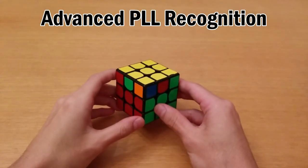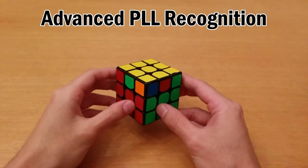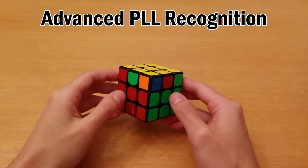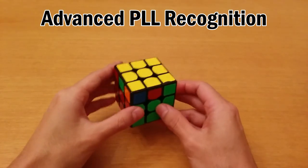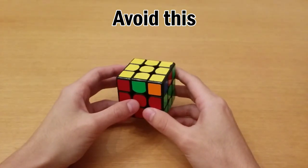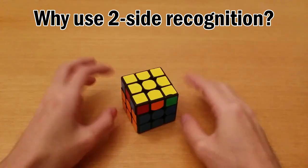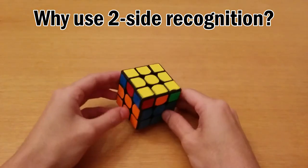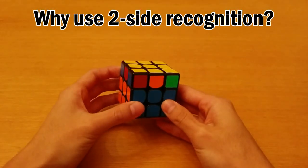Being able to recognize any PLL case by looking at only two sides is a very beneficial skill to have. It will decrease your recognition time and decrease the amount of unnecessary AUFs you have to do before you realize what case you have. One thing you really shouldn't do during PLL recognition is this or this. So besides the very obvious reasons why you might want to learn this, here's another reason why two-side recognition is good.